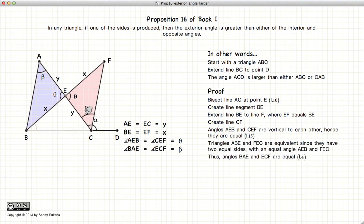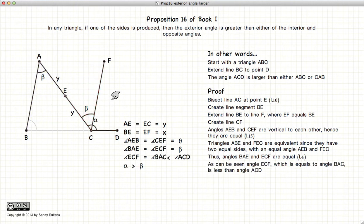Which gives us that this angle here is beta. It's very clear from the diagram that alpha is larger than beta. So alpha, the exterior angle, is larger than one of the opposite interior angles.